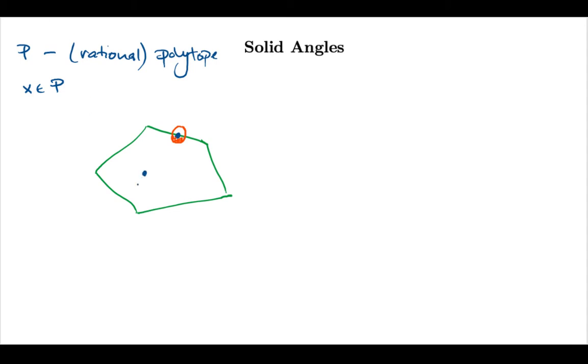If x is in the interior of my polygon that will have an angle of one. Things get interesting in dimension two only at a vertex, so at a vertex I will have an angle that we sort of normally measure in the plane except that a 360 angle gets normalized to be one. I want to now have a concept like this in any dimension.